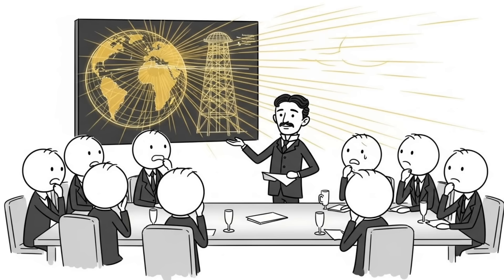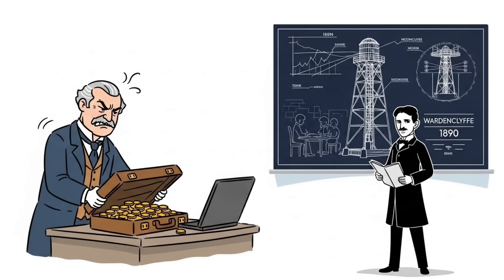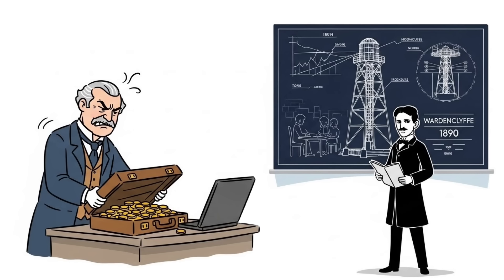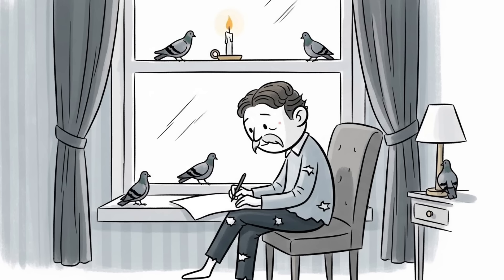His investors thought he'd lost his mind, especially when he tried to build the Wardenclyffe Tower to give free wireless electricity to the entire world. JP Morgan pulled his funding when he realized free meant no profit. So Tesla died poor in 1943, spending his final years in a New York hotel room, feeding pigeons and writing letters about space energy.